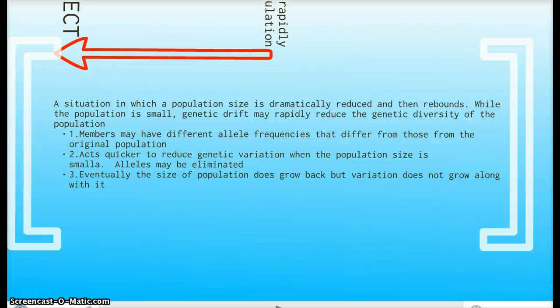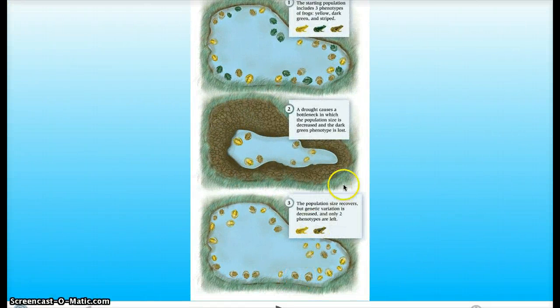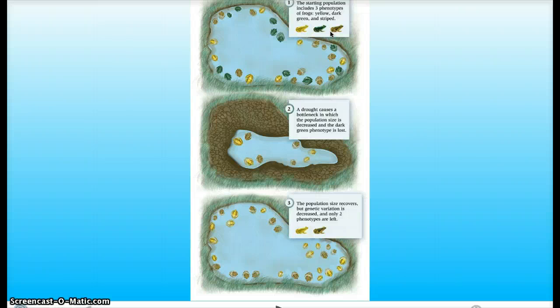We will see an example of this later on in the presentation. Now this is a picture that I got from the book that explains it very well. We have three types of frogs in this pond: a yellow, green, and a brown frog.